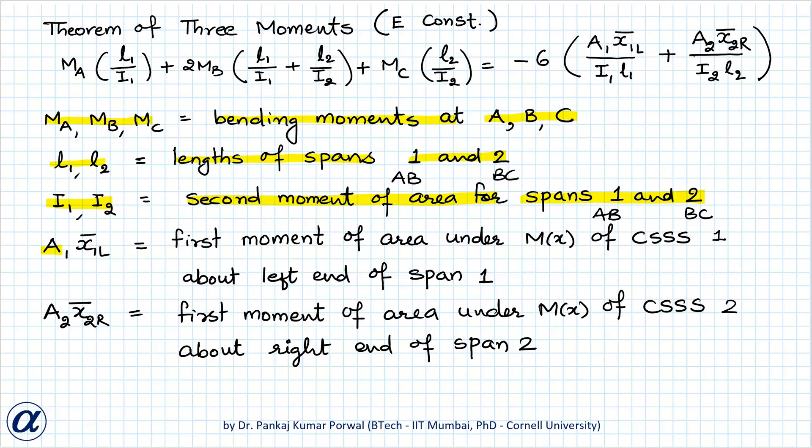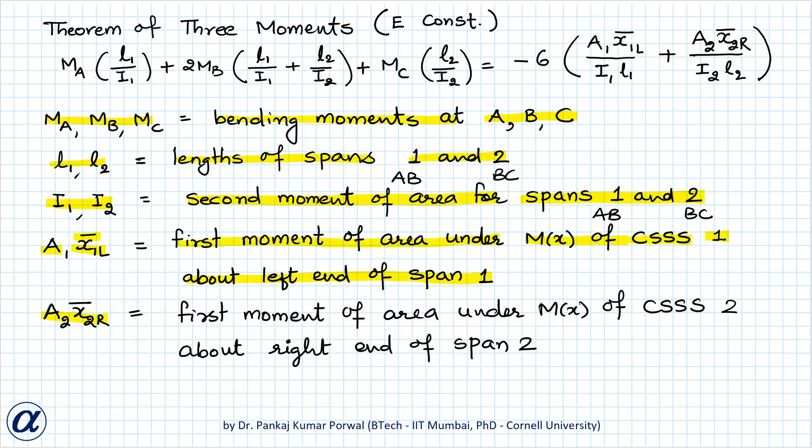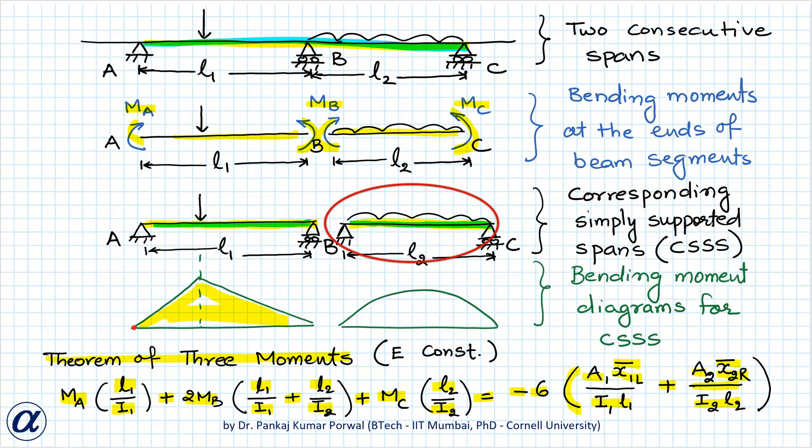And here A1 X1 L bar is first moment of area under bending moment diagram of corresponding simply supported span 1 about left end of the span 1. For span 1, we write first moment of area under bending moment diagram about the left end of the span that is end A. Similarly, A2 X2 R bar is first moment of area under bending moment diagram of corresponding simply supported span 2 about the right end of span 2 that is, for span 2, we write first moment of this area under bending moment diagram about this end that is, end C of span BC.